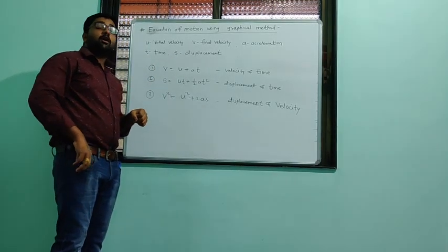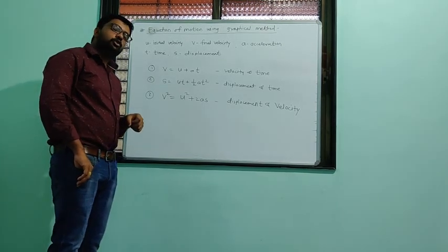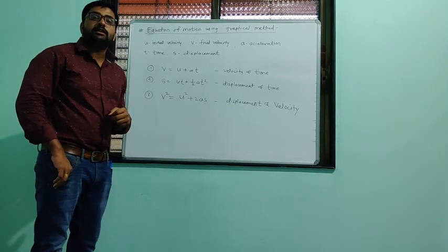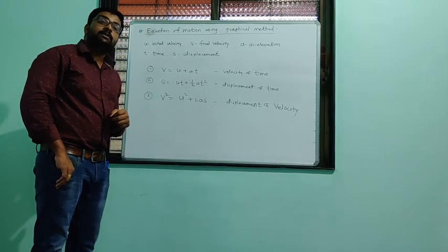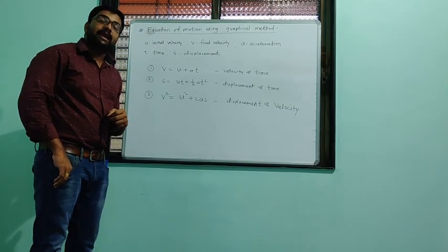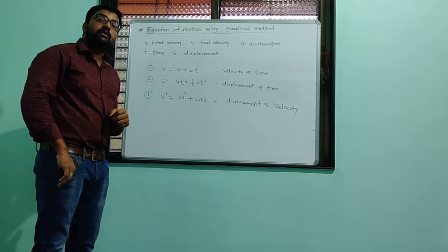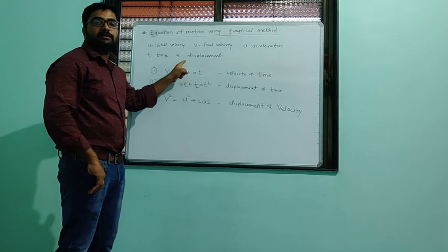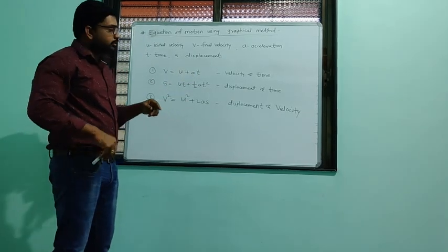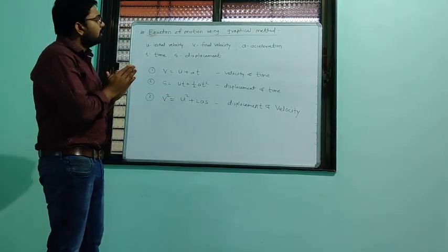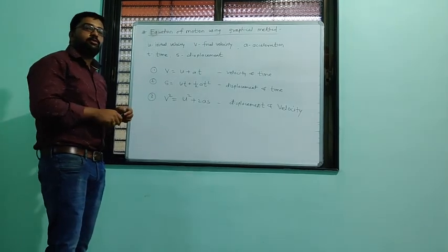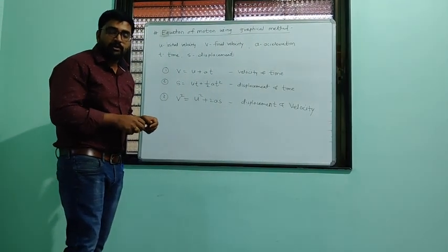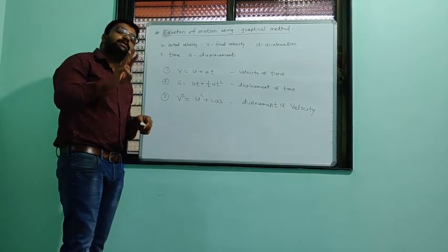If an object moves with initial velocity U, after time T it will attain final velocity V with acceleration A. Throughout that motion, the displacement produced is S. We can express this motion using three equations.